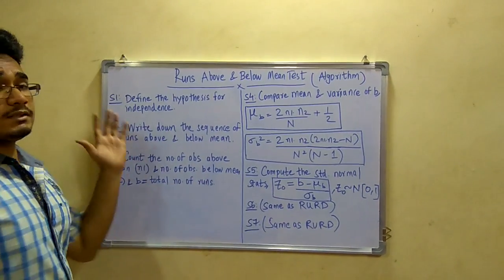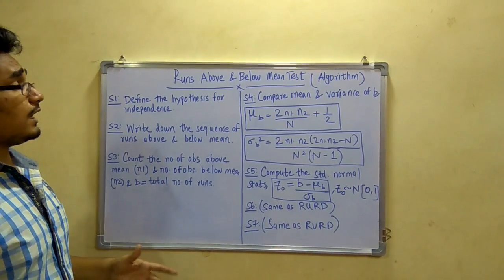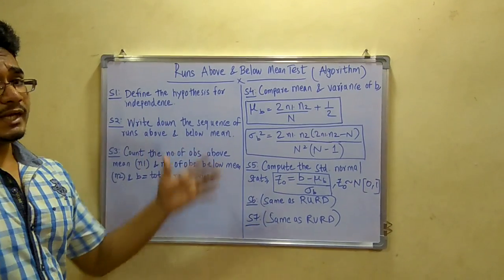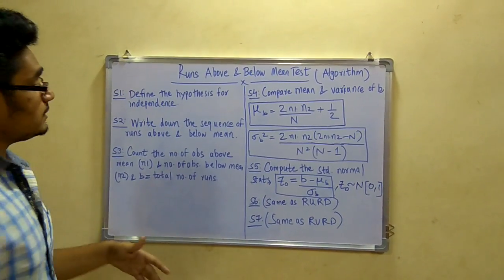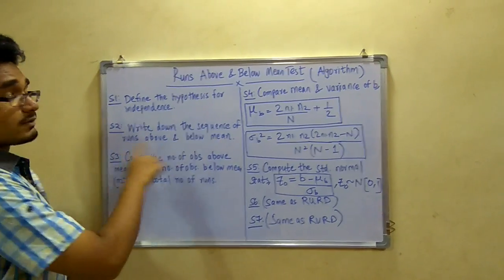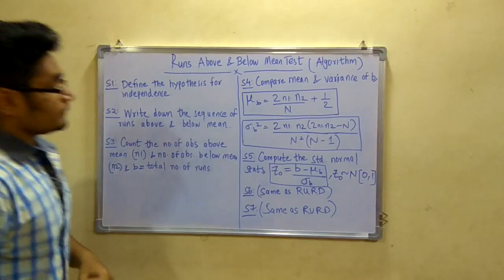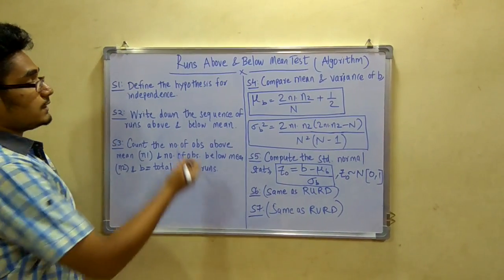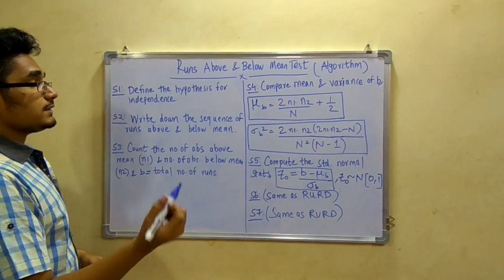So first, this step 1 remains the same as runs up and down. That is to define the hypothesis for testing the independence. And second step is to write down the sequence of runs above and below mean. Now for this, the sequence in runs up and runs down, we have this plus minus sequence.